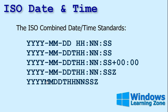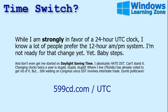Don't worry if this all seems confusing — I'm just going over what the standard is and you don't have to get this complex with it yet. While I'm strongly in favor of a 24-hour UTC clock, I know a lot of people prefer the standard 12-hour AM/PM system and I'm not ready to make that change yet either. But I think as the world gets smaller and we're all communicating over the internet and doing business in different countries, a 24-hour universal clock would be perfect — so it's three o'clock on Tuesday everywhere.